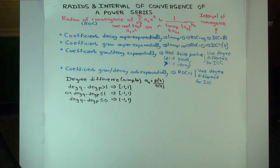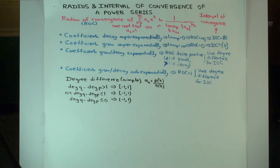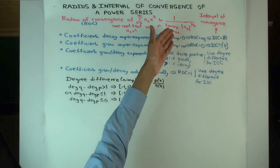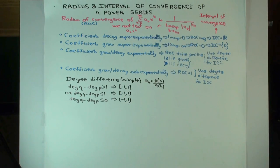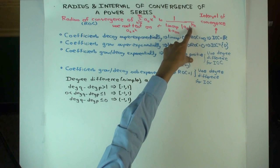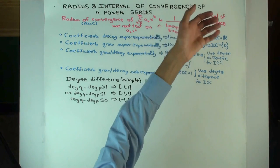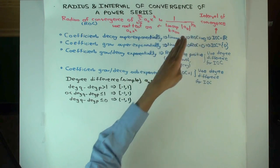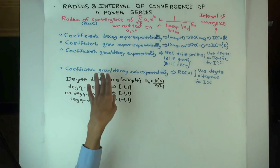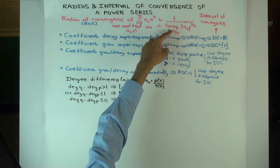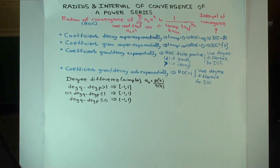What sub-exponential means is that the coefficients are not growing or decaying exponentially at all. So what would the limsup be if there's no exponential growth or decay? If it's sub-exponential then the limsup would be exactly one — for example if a_k is a polynomial, then that polynomial to the power one over k won't grow fast enough to give something bigger than one, and it's not decaying, so it just gives you one. Whenever the coefficients are purely sub-exponential, the radius of convergence is the reciprocal of one, which is one.